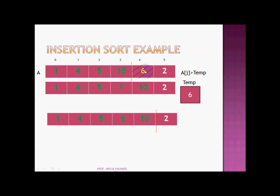Now pick the next item from the unsorted sublist and put 6 into temp. Check: is 10 greater than 6? Yes, so we move 10 from index 3 to index 4, leaving the place empty. Comparisons are remaining and we haven't reached index 0, so we check: is 5 greater than 6? No, it is not. That means no further comparisons are needed. Now put 6 into the empty place. Our sorted sublist is now this, and the unsorted one is the remaining element.